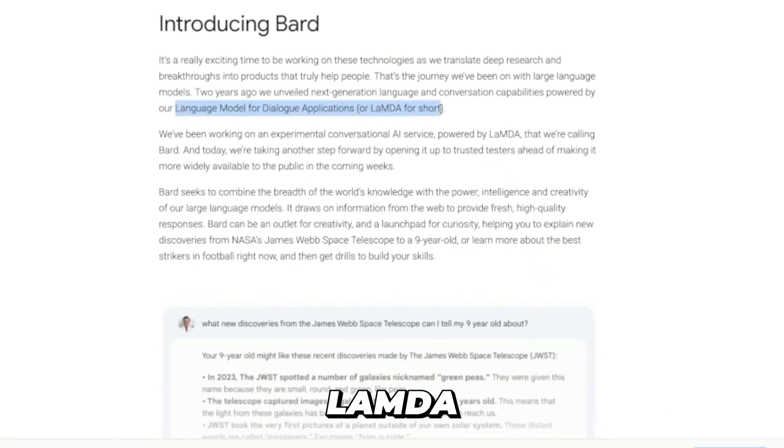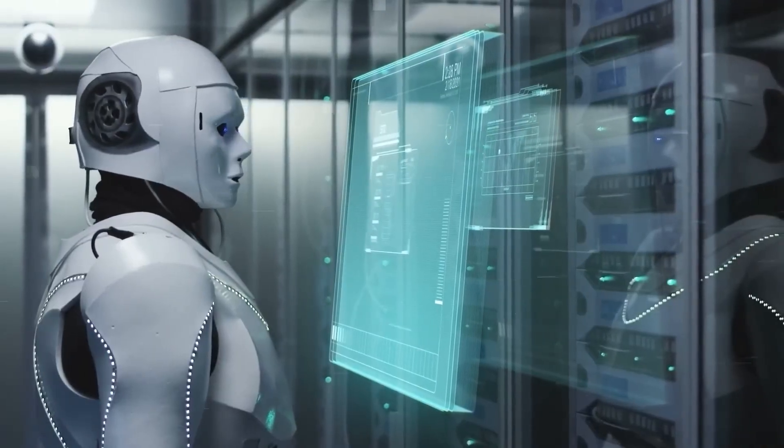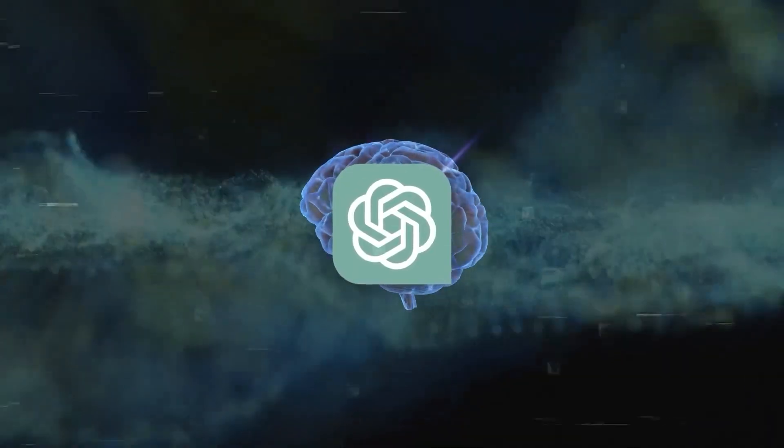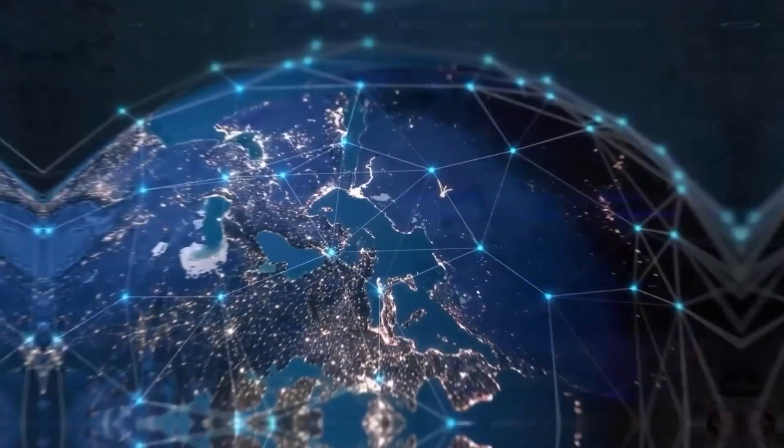Google introduced BARD, a chatbot powered by the Lambda line of large language models, also known as LLMs, in March 2023. Its inception was in response to the meteoric rise of OpenAI's ChatGPT, which made its debut in November 2022 and quickly became a sensation worldwide.